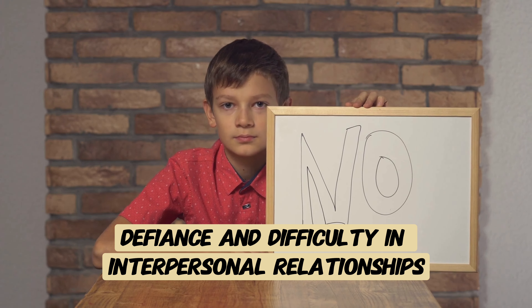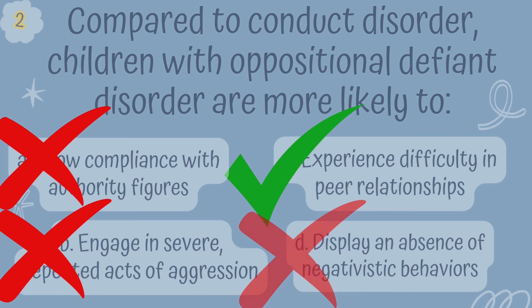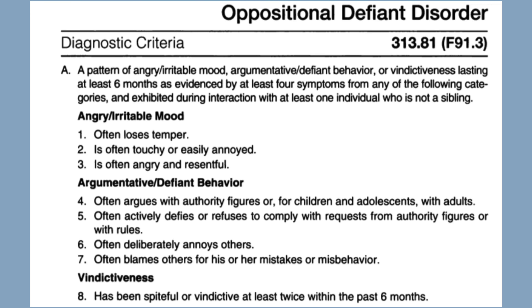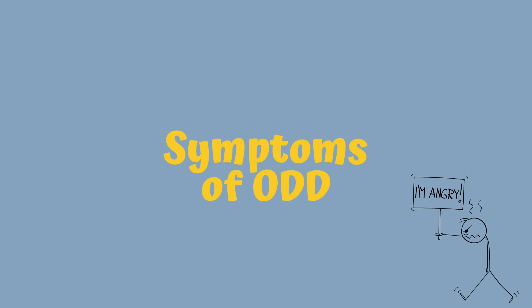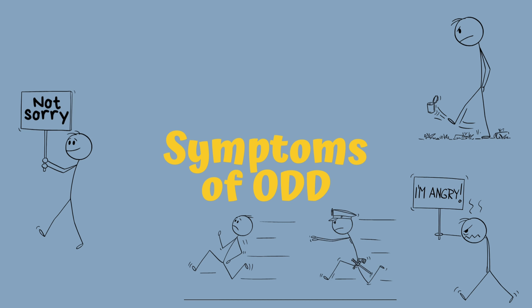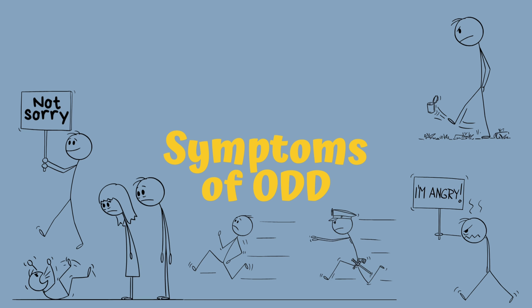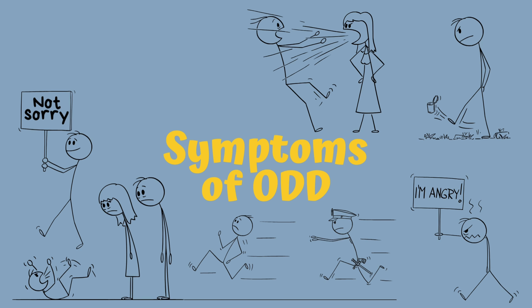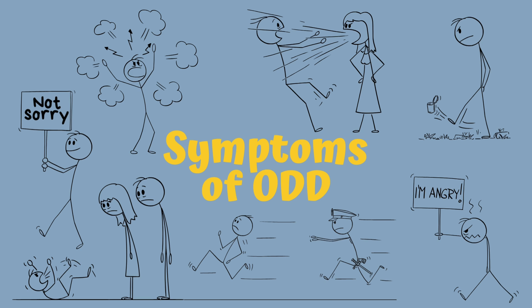Option D, Display an absence of negativistic behaviors, contradicts the defining features of ODD, which involves negativistic, hostile, and defiant behaviors toward authority figures. Children with ODD commonly exhibit these behaviors, setting them apart from those with conduct disorder.